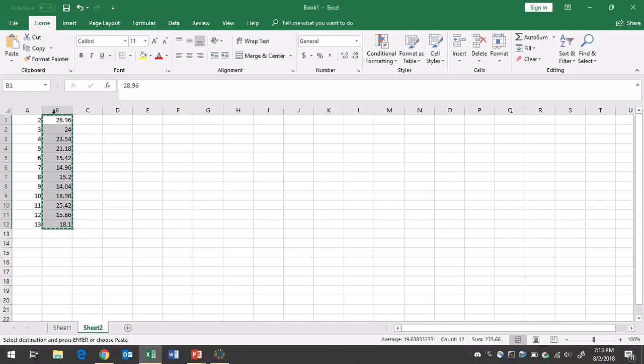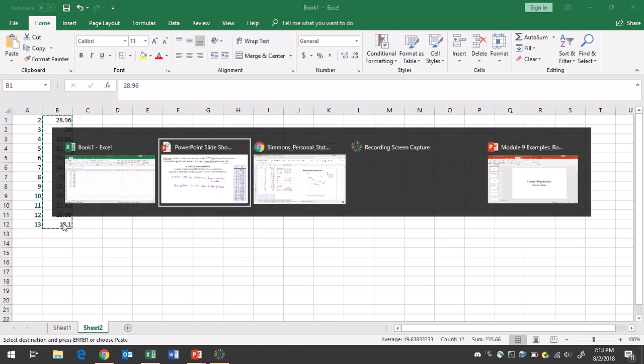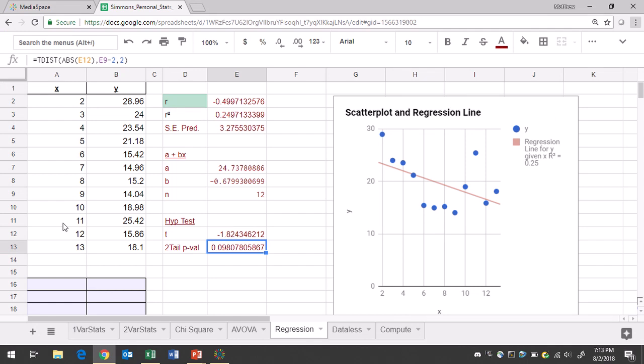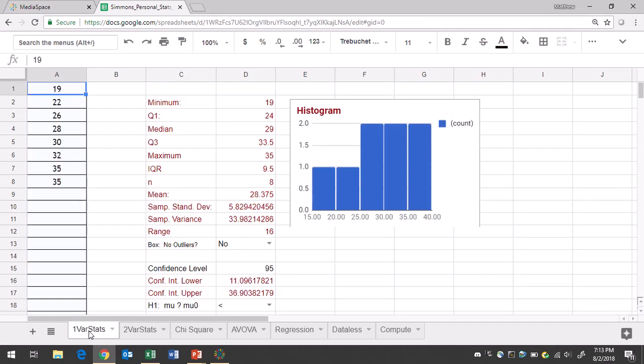You can actually copy your Y values from your spreadsheet document, Excel, and then you can go to Google Sheets. In the one variable stats tab, you can go ahead and paste your data into column A.